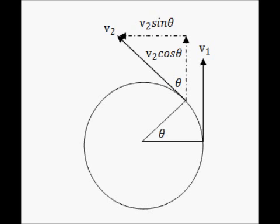What I've done is I resolved the velocity of the particle at the second point into its two components, vertical and horizontal. We can see that we can resolve it into V2 sine theta and V2 cos theta. You can prove using geometry that the two thetas are going to be identical to each other. So all I've done is simply resolve the V2 velocity into its two constituent components, horizontal and vertical.